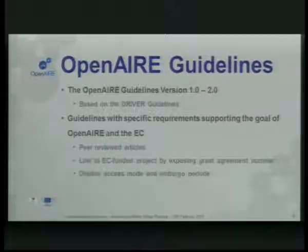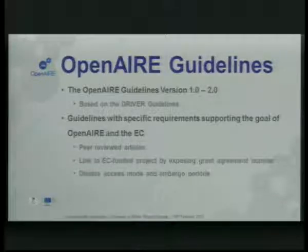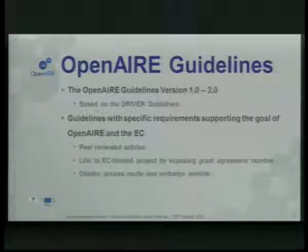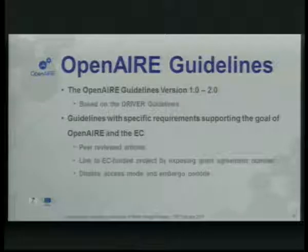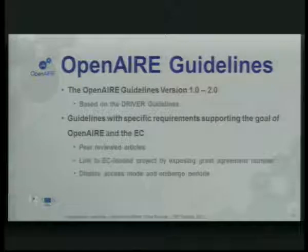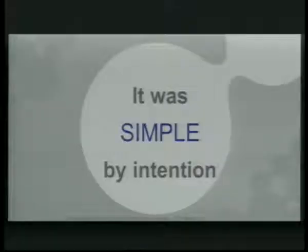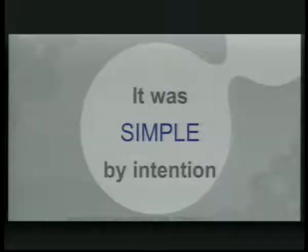The approach involved getting peer-reviewed articles from the repositories and linking those articles to projects by getting a grant agreement number from the repositories, then displaying the open access mode of the articles and possibly the embargo period, if such existed. That was a very simple approach, and that was very intentional. We needed to get results quickly, but the uptake was rather slow.